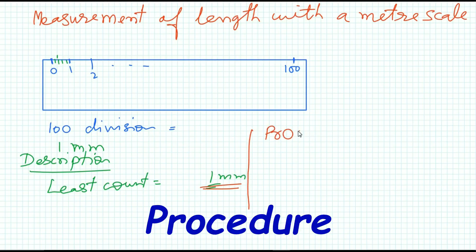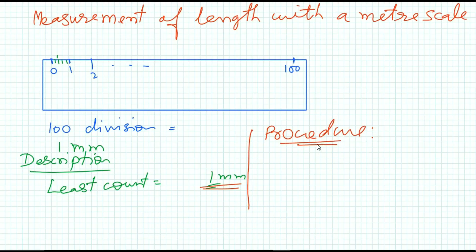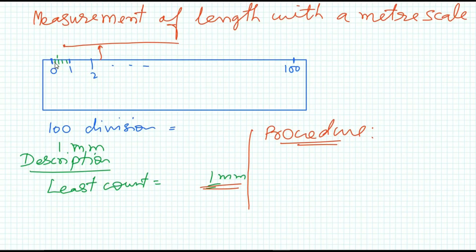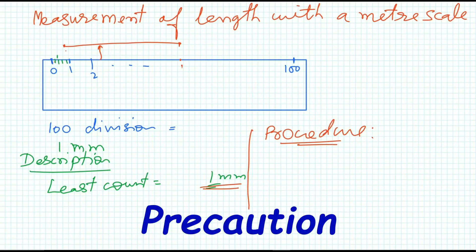Now, the procedure: to measure the length, the meter scale must be placed as close as possible to the object being measured. The starting point must be matched with 0. If 0 is not clear on the meter scale, we start from 1 or 2. We note the final reading where the object ends and subtract the starting reading from the final one to get the accurate measurement.